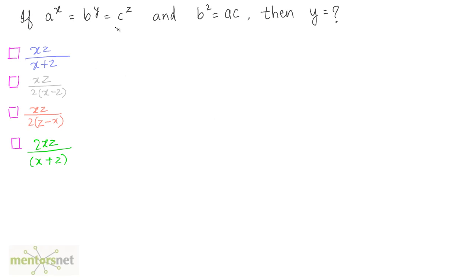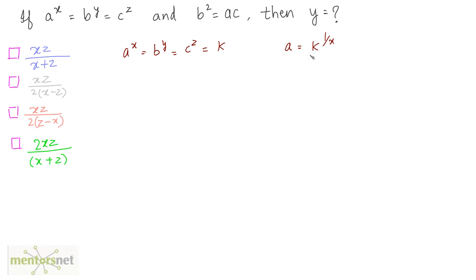Now for the final question: we have been given a raised to x equals b raised to y equals c to the power of z. We can write a to the power of x equals b to the power of y equals c to the power of z equals k. Then a equals k to the power of 1 by x, meaning x is the root of k; b equals k to the power of 1 by y; and c equals k to the power of 1 by z.